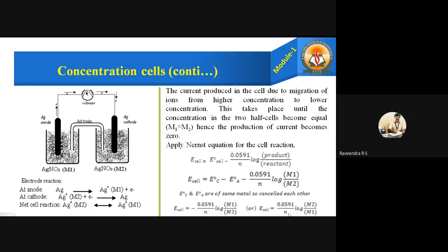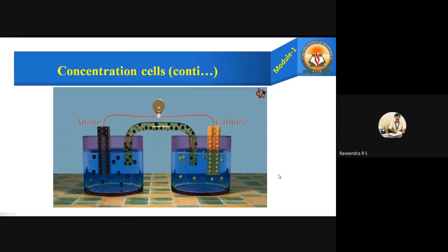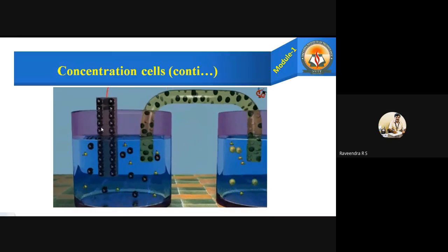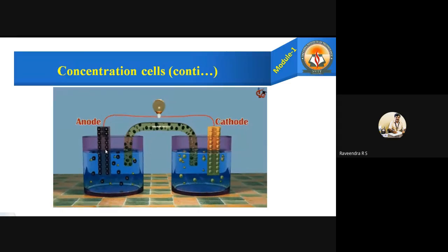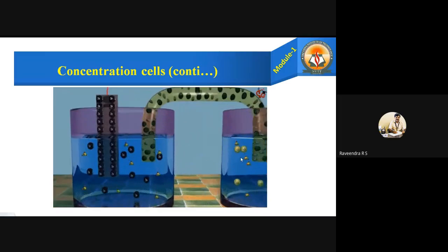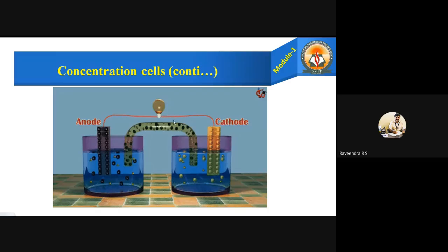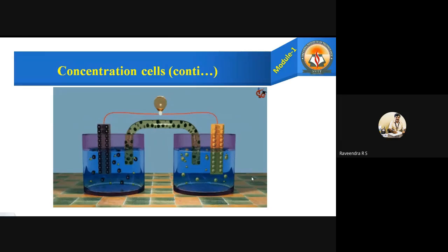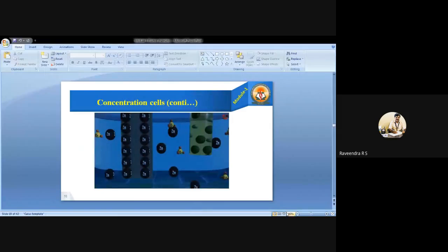So the final equation is: E_cell = (0.0591/n) log(M2/M1), where M2 and M1 are the molar concentrations of the electrolyte in the two half cells. This is shown in the animated diagram of the concentration cell. You can see both electrodes — for example, zinc electrodes dipped in zinc sulfate solution — both anode and cathode are the same metal, connected by a salt bridge and electrical connection. This is how the concentration cell is constructed.